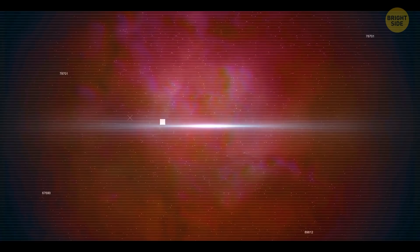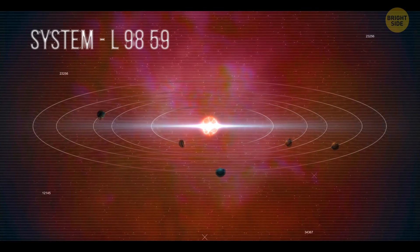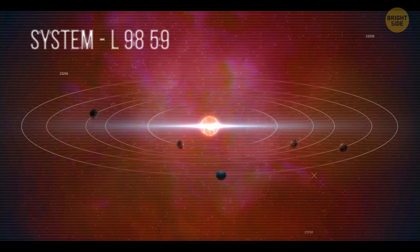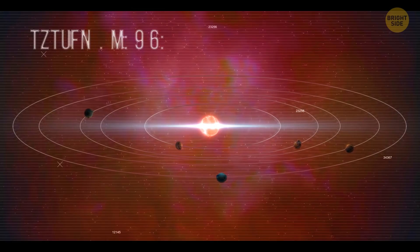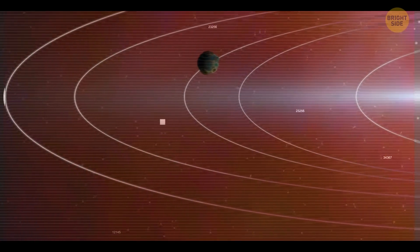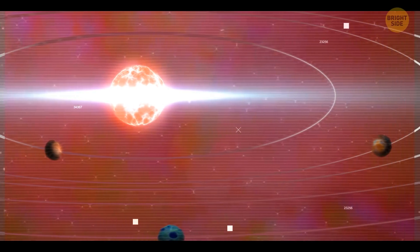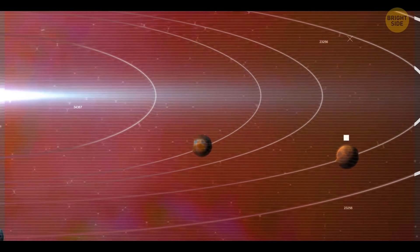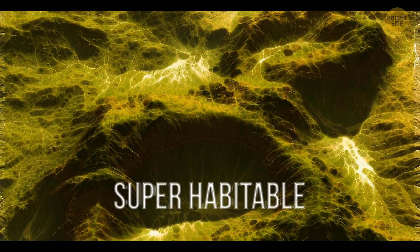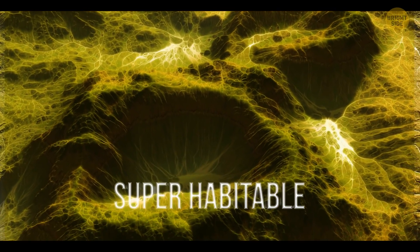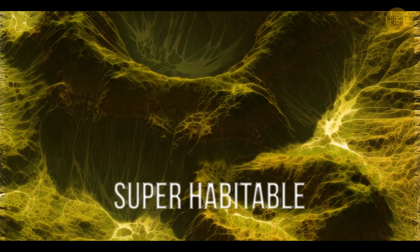The discovery of a star system like L9859 is very important to us because we're always looking for life outside of our solar system. And super-Earth-class planets are even better suited for the origin of life than planet Earth itself. Such planets are sometimes called super-habitable. So some scientists think that Earth is a good place for life, but not the best.